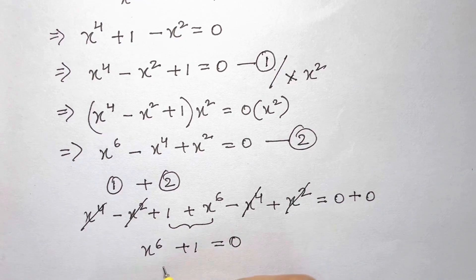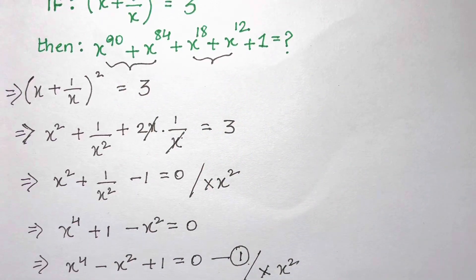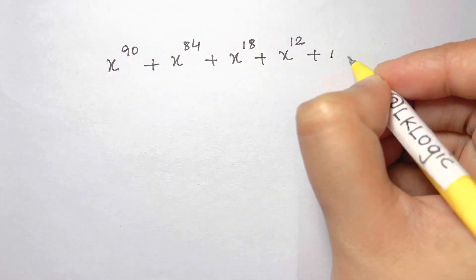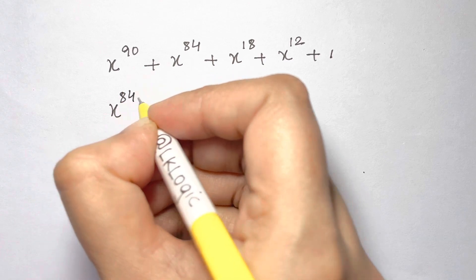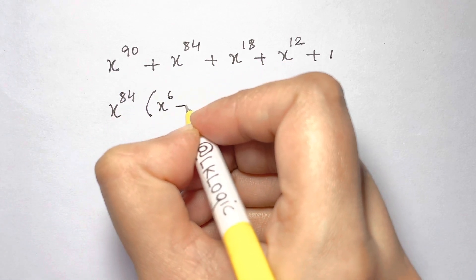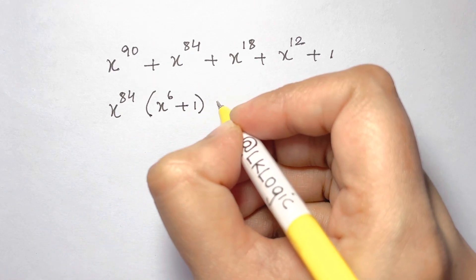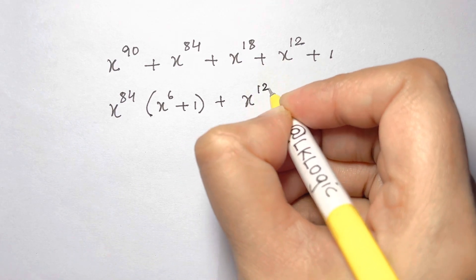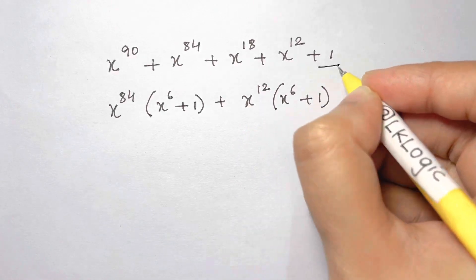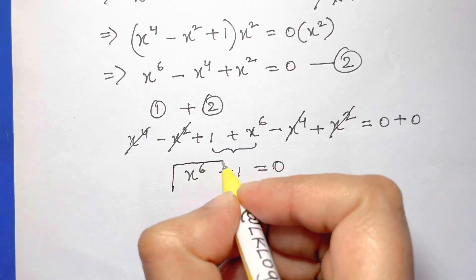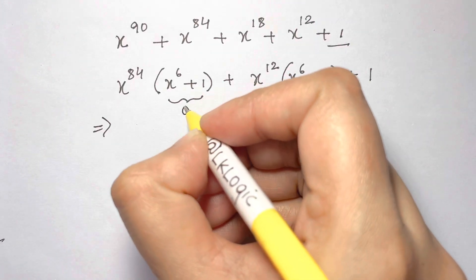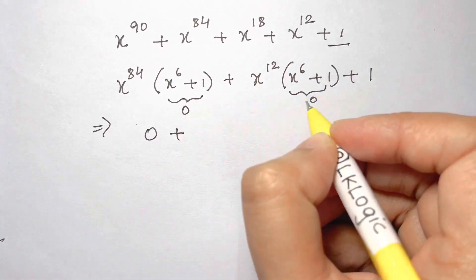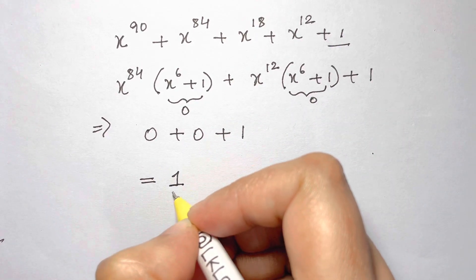Now solving x⁹⁰ + x⁸⁴ + x¹⁸ + x¹² + 1: factor out x⁸⁴ from the first two terms, leaving x⁸⁴(x⁶ + 1), and factor out x¹² from the next two terms, leaving x¹²(x⁶ + 1), plus 1. Since x⁶ + 1 = 0, both bracketed terms equal 0, giving 0 + 0 + 1 = 1. The answer is 1.